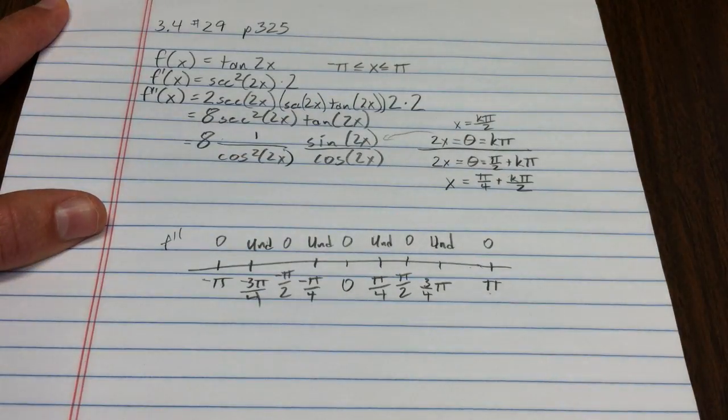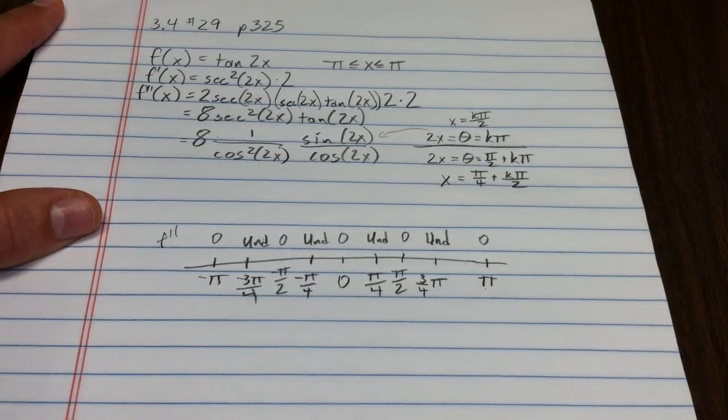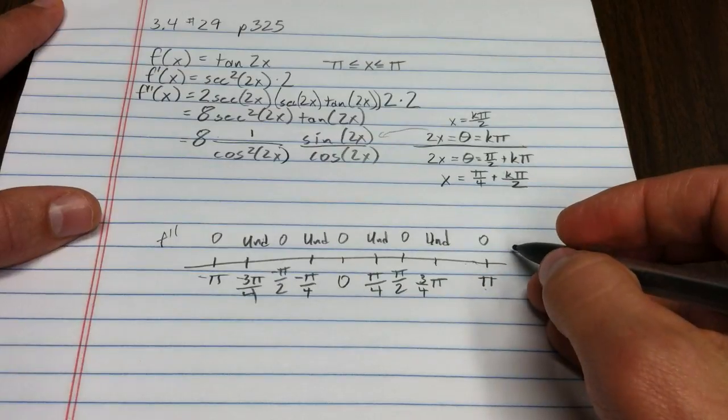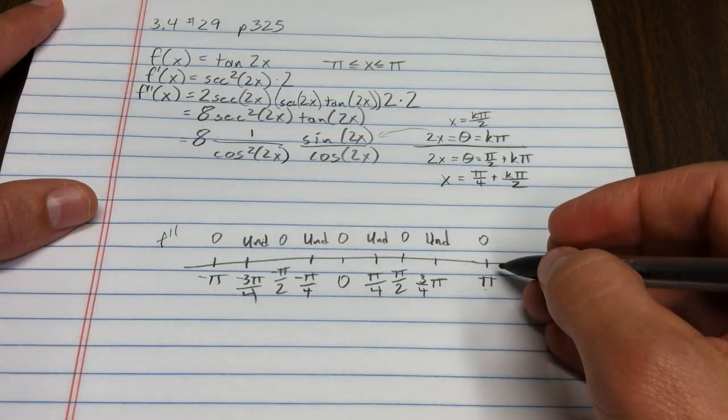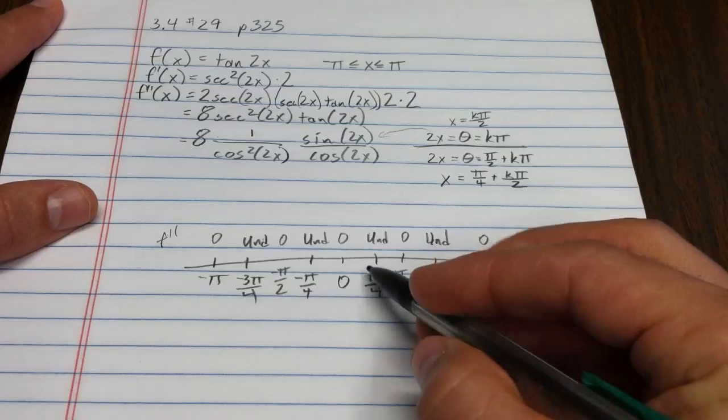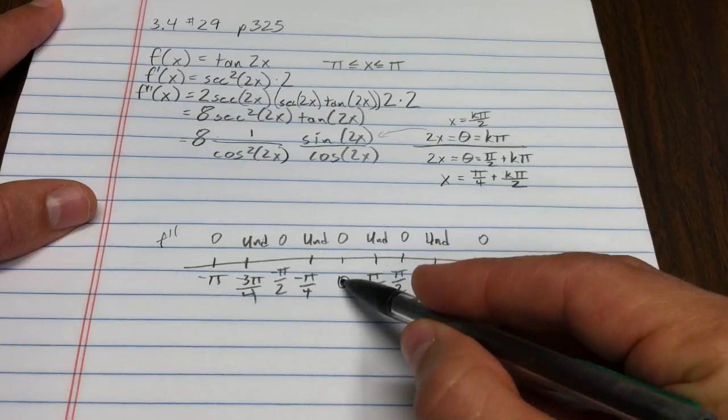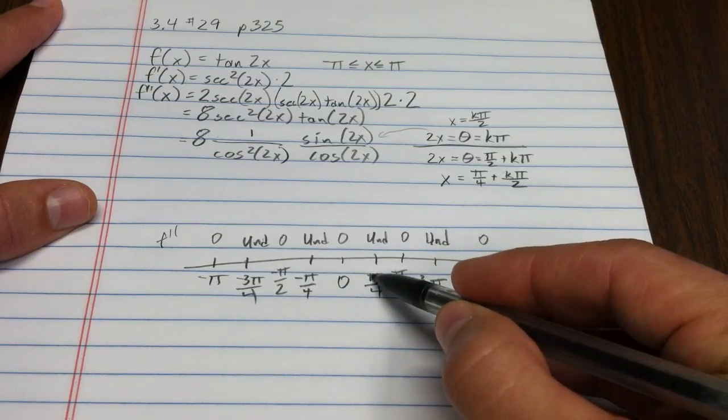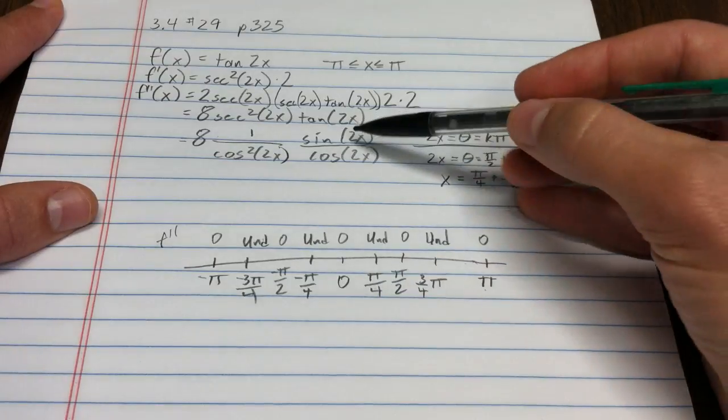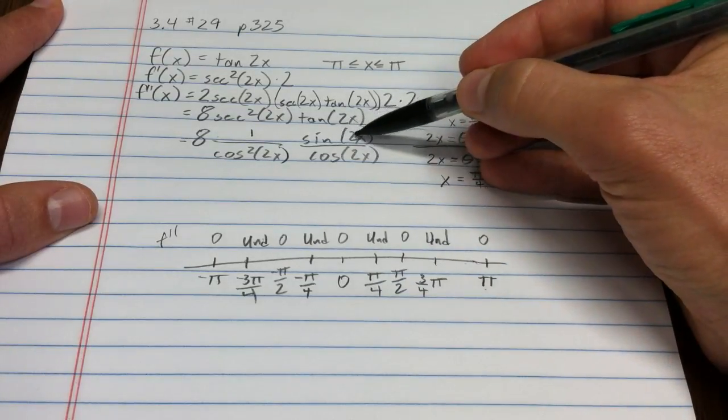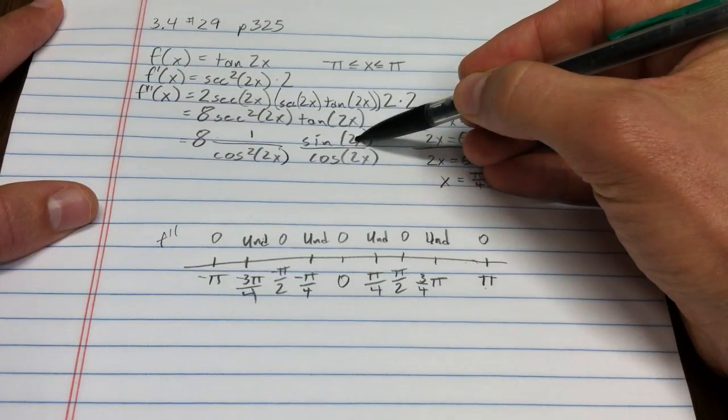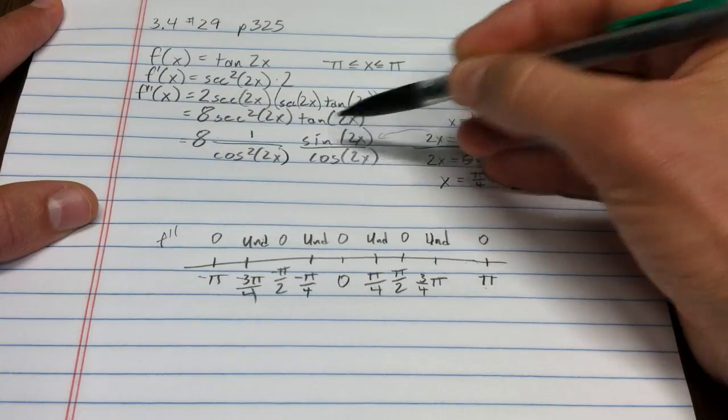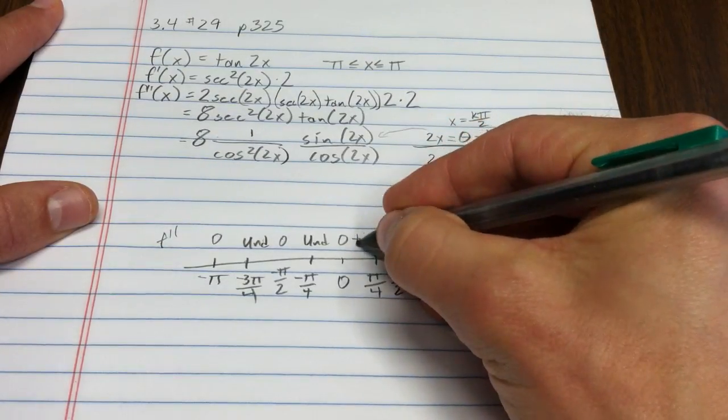My job is to figure out which ones of these it's concave up between, and which ones it's concave down between. Let's start with sort of a simple place. Let's start with something greater than 0, but less than pi fourths. The nice thing there is, sine is positive, and cosine is positive. So, everything inside is positive, that's positive.